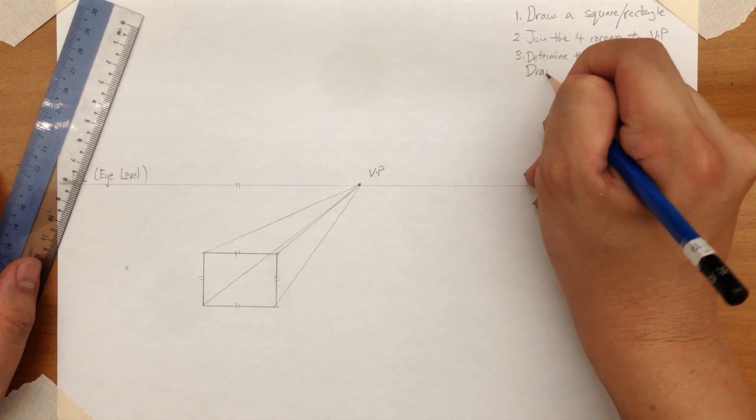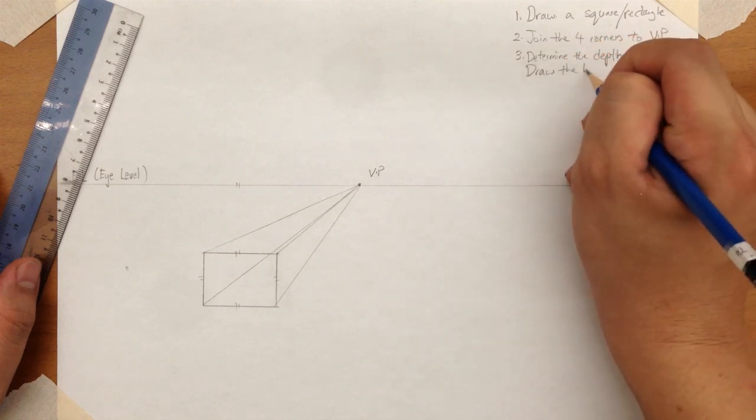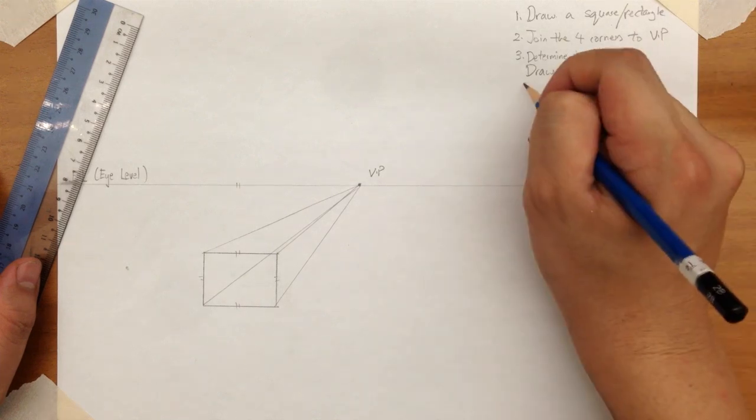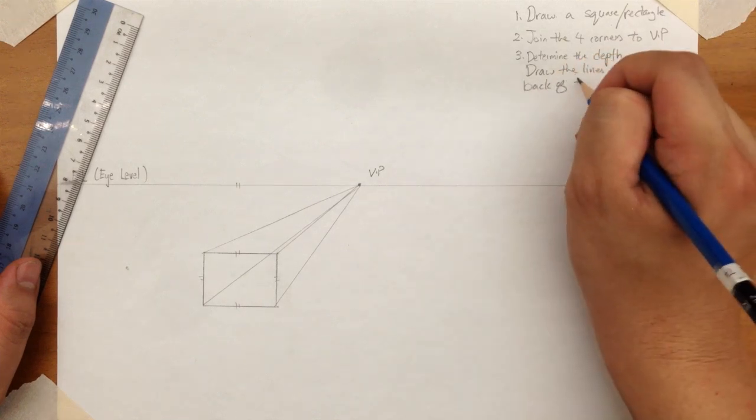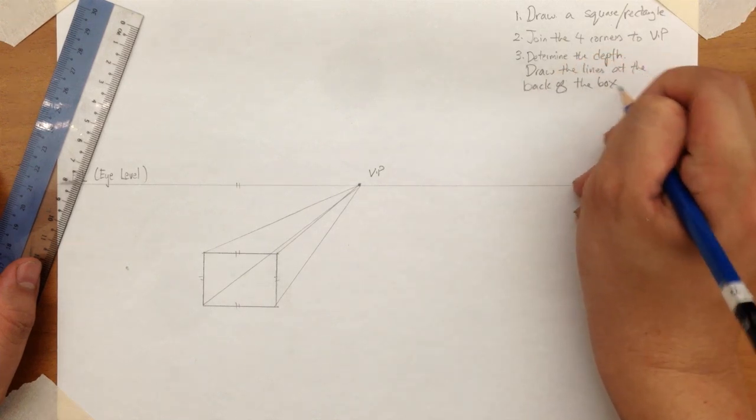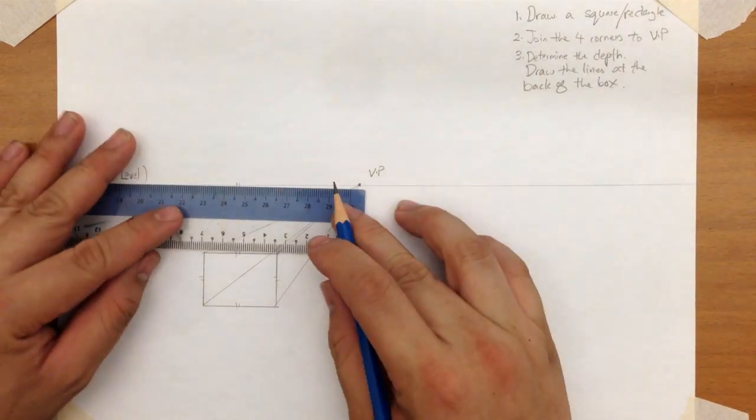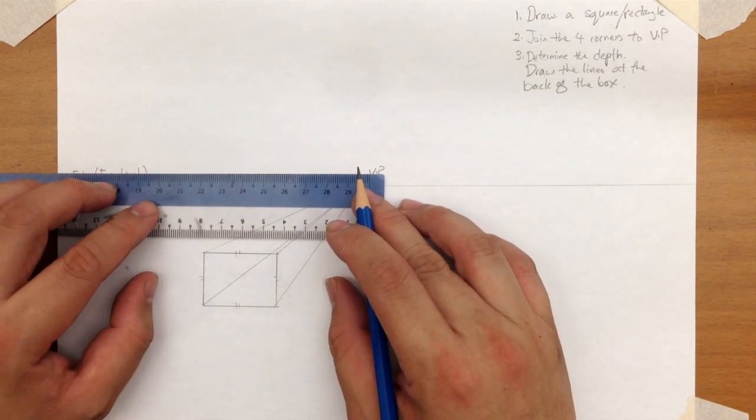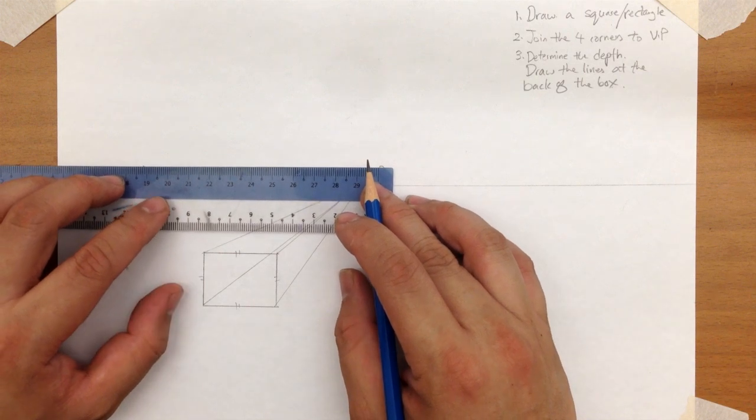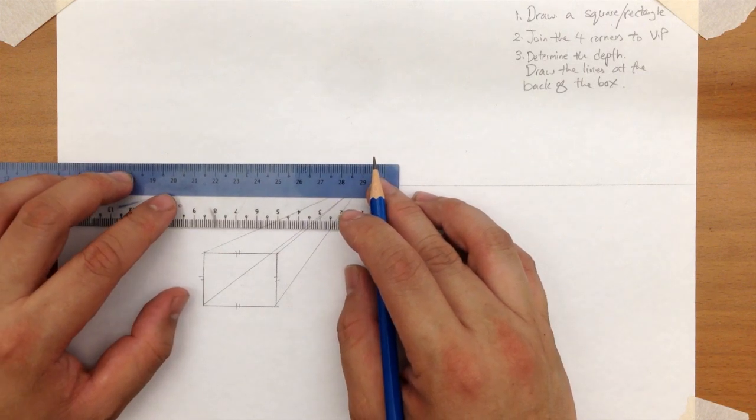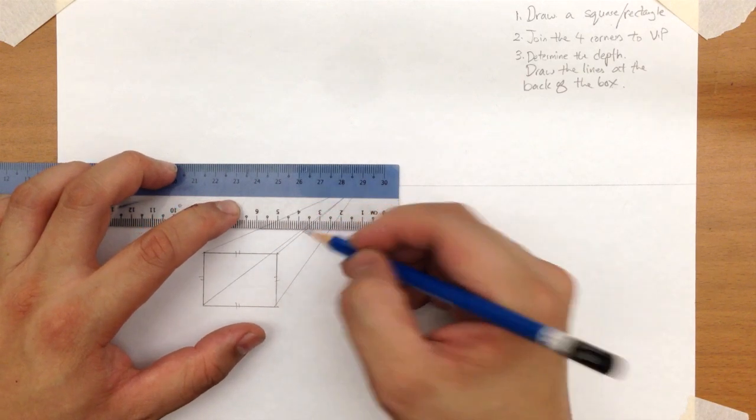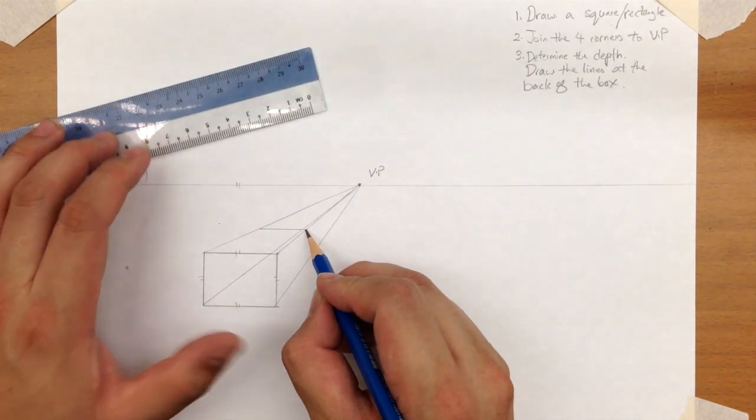Determine your depth. Draw the lines at the back. Take your ruler. Suppose I start from here. I'll just move it up. Then you can stop wherever you want. Depending on how big you want the box to be. So let's say I'm happy with this. So I'll just draw a line across.